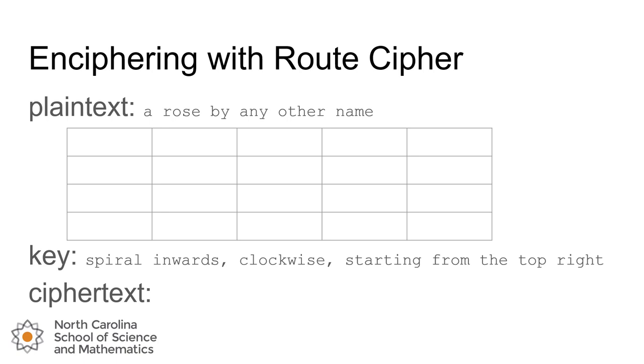We'll use our plaintext message, 'a rose by any other name,' which is 19 characters, and start by selecting a grid that can hold all 19 characters. In this case we've chosen four rows and five columns.